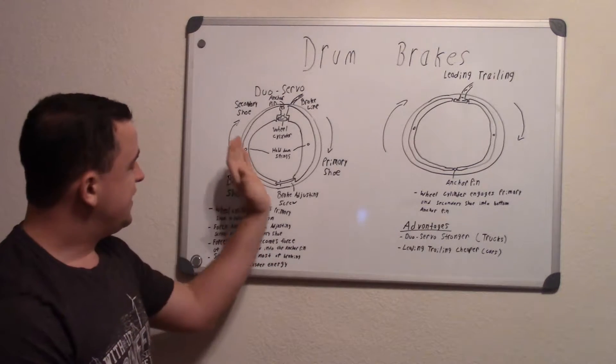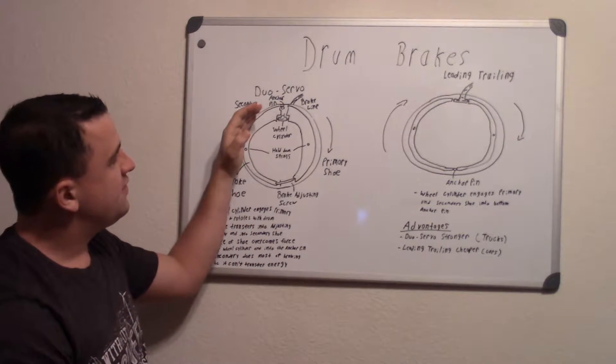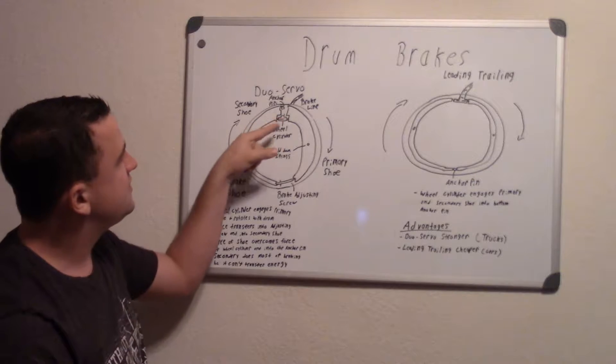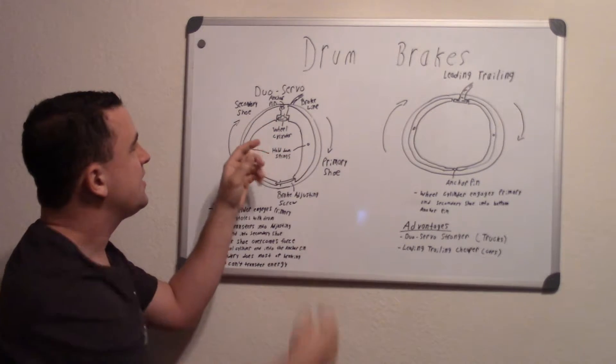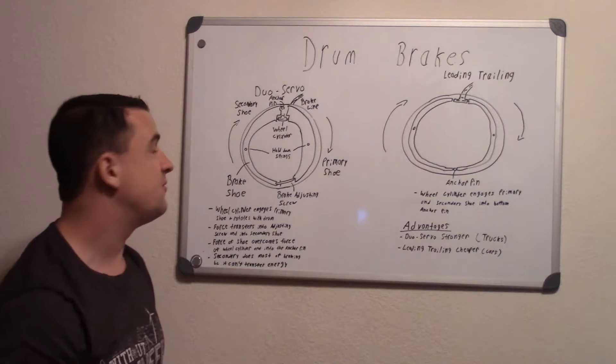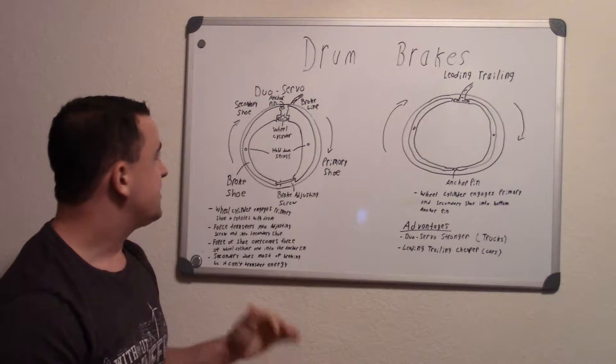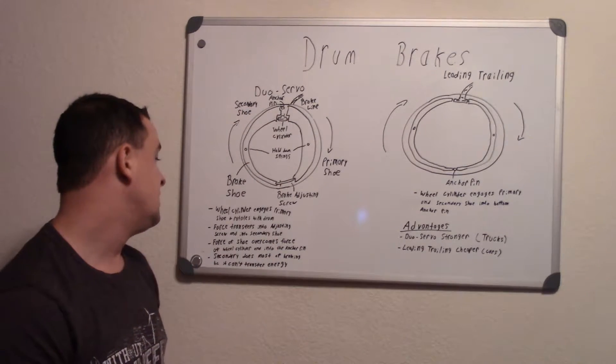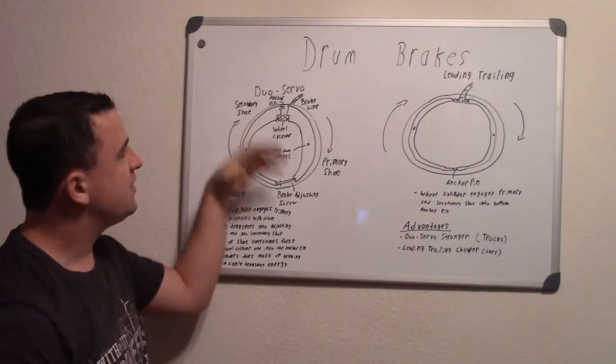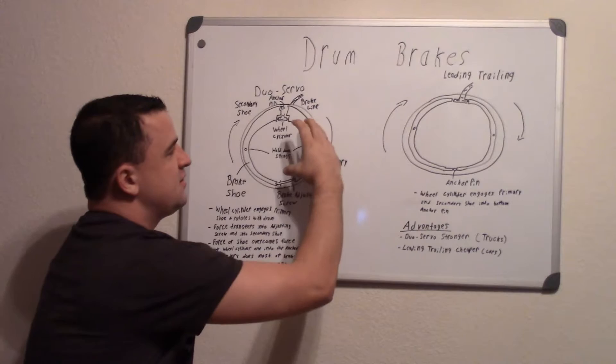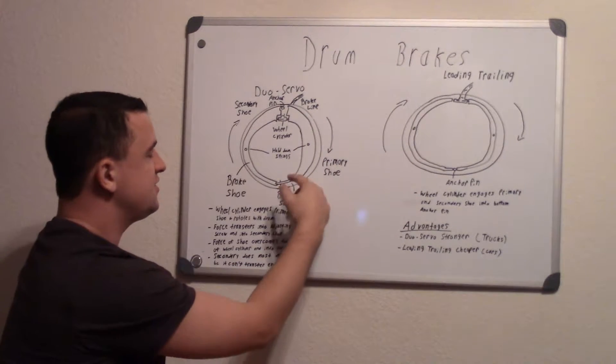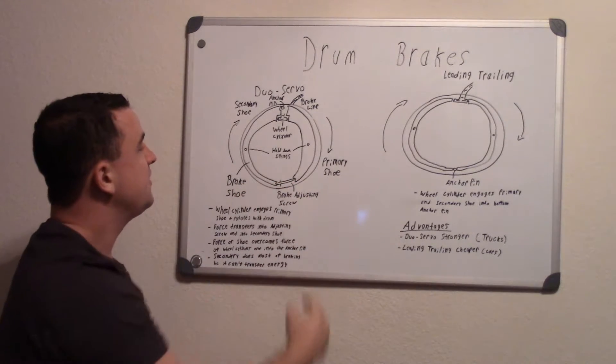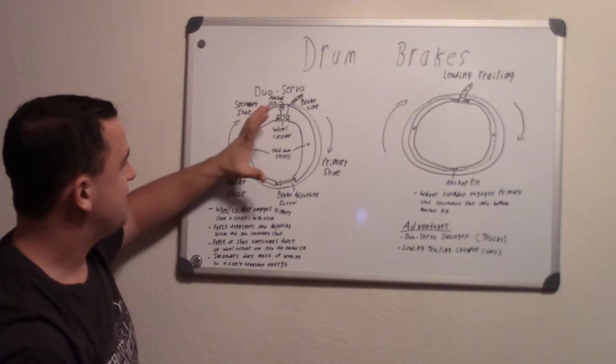And then this secondary shoe starts rotating with the vehicle as well, but eventually the force when it's rotating overcomes this wheel cylinder and that little pin there actually goes back in. But this anchor pin up here stops that from rotating, and so because of that the secondary shoe actually does most of the braking in duo servo because it cannot transfer the energy. So this front shoe is transferring some of that energy through the brake adjusting screw into the secondary shoe. So secondary shoe is getting some energy down here at the bottom, but it stops up here at the anchor pin and does braking in the rear.